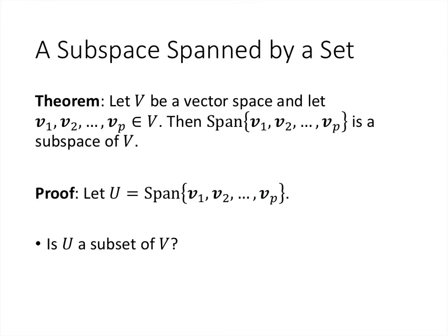An important example of a subspace is the subspace spanned by a set. This is a general theorem true for any vector space: if you take some vectors v1 through vp in your space and look at their span, that span is a subspace. We'll prove it the same way as before — four things to prove: U is a subset, U contains the zero vector, and U is closed under the two vector space operations.